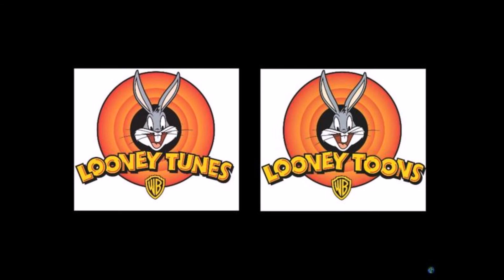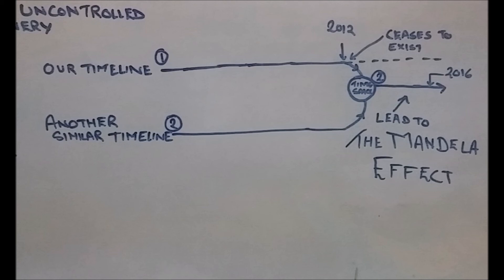But due to a lot of examples, I believe that I am from timeline one, so I'm just gonna call that our timeline. So it ceases to exist and another timeline with similar history throughout, with some small gaps, some glitches.